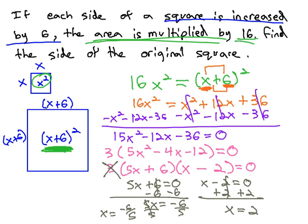However, before we say that this is our final answer, we need to remember that x is representing the side of a square. The side of a square is not going to be negative, so we can throw this answer out. Our only remaining answer is x must equal 2. The original square must have been a 2 by 2 square.